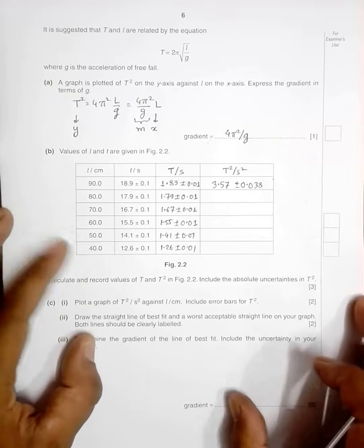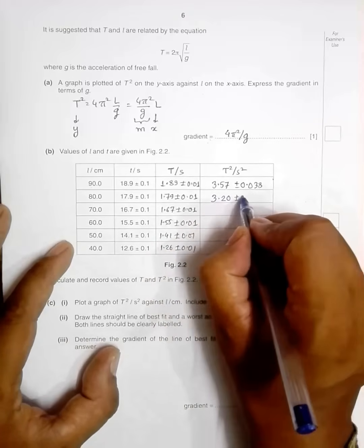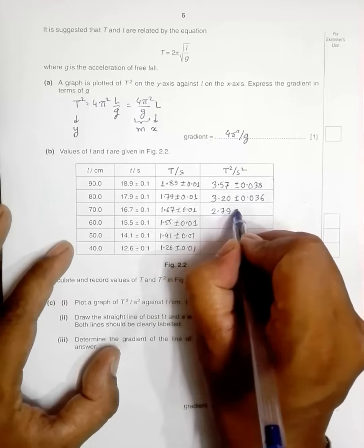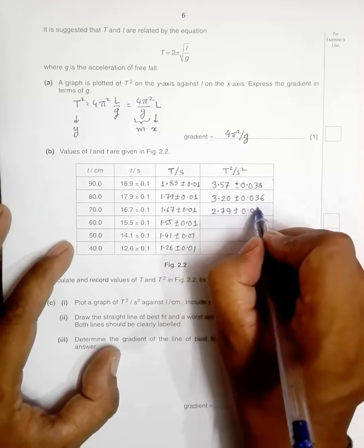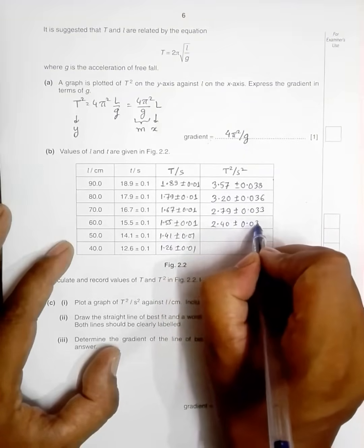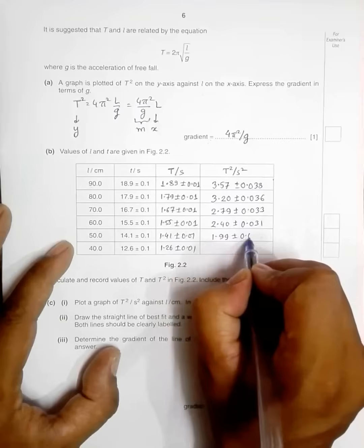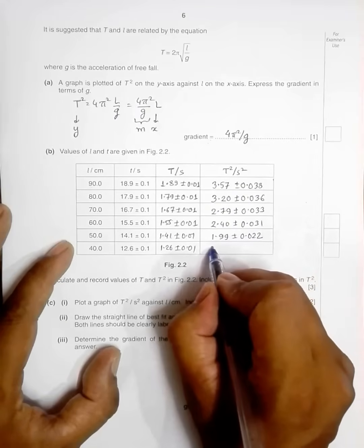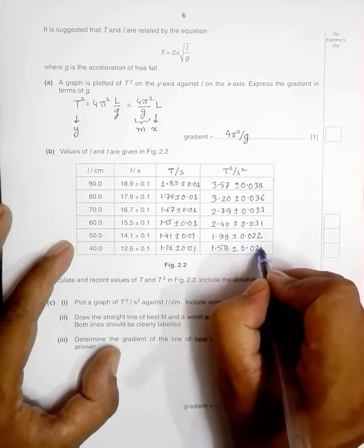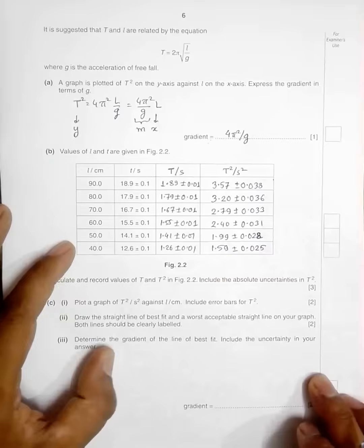We can talk about this thing sometime later, but here let us first finish the table. So if I do more and more calculations like this, I have already made a table with me. So that will give me 3.20 ± 0.036, we have 2.79 ± 0.033, we have 2.40 ± 0.031, we have 1.99 ± 0.022, and we have 1.59 ± 0.02.